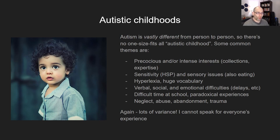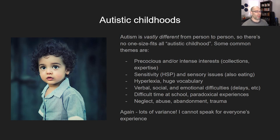One common thing is precocious and/or intense interests. Precocious means things you might be too young for — an intense interest in politics, economics, or whatever. We often paradoxically grow up too fast but then don't grow up enough in other ways. You might develop collections of things or intense intellectual curiosities and want to develop expertise far before your age. But if this isn't you, that's fine — there are plenty of autistic people who don't fit this.